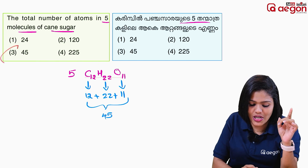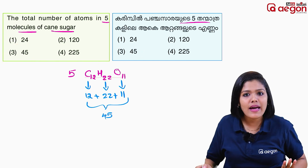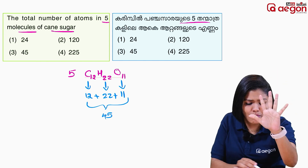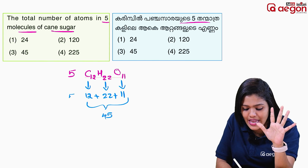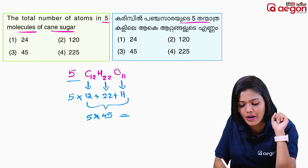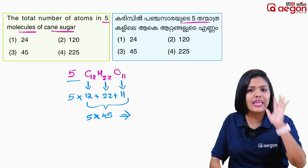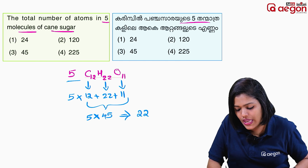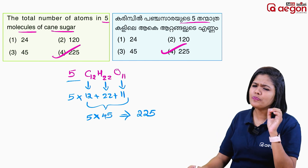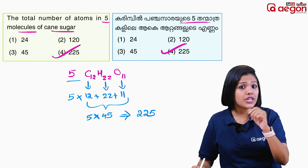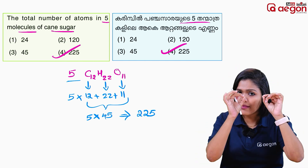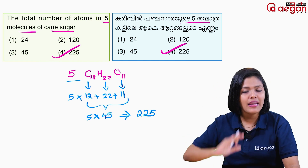The answer is 55. So we choose the first item — this is the 4th option. This is 100% correct. You can multiply the atoms per molecule by the number of molecules.